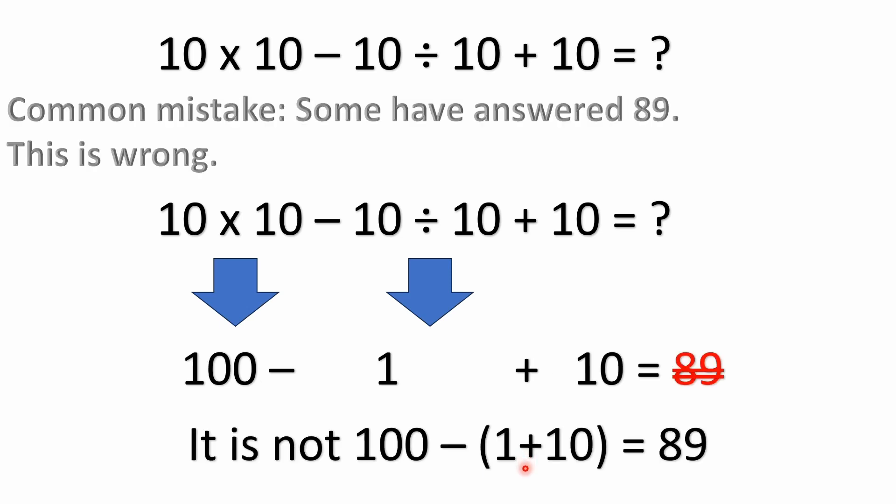Now, a common mistake: a lot of people have answered this online with an answer of 89, which is incorrect. They do everything correct. And they get down to this 100 minus 1 plus 10. And for some reason, they're saying this is 89, which is completely false.